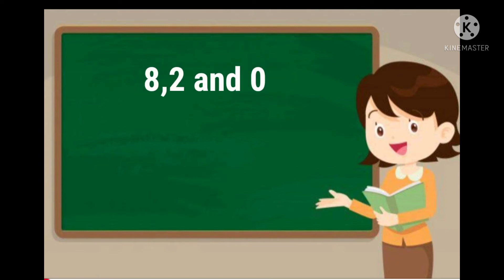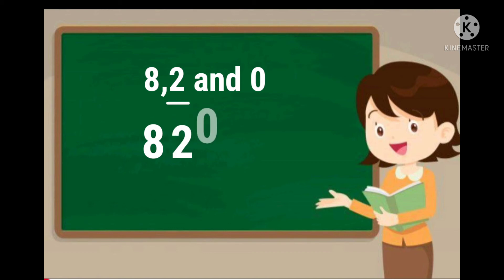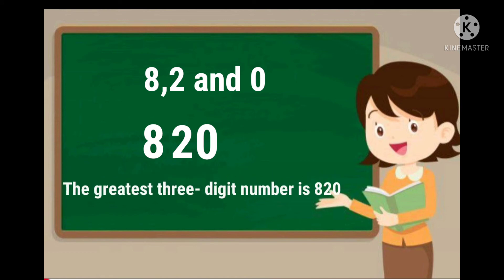Children, next example for you. Form the greatest three digit number using the digits 8, 2 and 0. Use each digit only once. So, we arrange the digits in descending order. Here, 8 is the greatest digit, so we can write 8 first. 2 is the next greatest digit. 0 is the smallest digit. So, the greatest three digit number is 820.